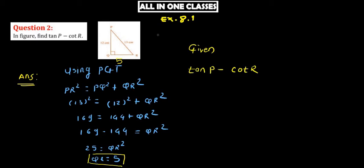The formulas we'll use: tan P equals opposite side QR upon PQ, minus cot R. Cot R equals QR upon PQ.